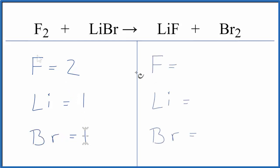On the product side, we have one fluorine, one lithium, and two bromines. So the fluorines and the bromines, those aren't balanced.